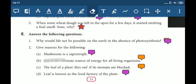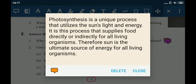Now, sun is the ultimate source of energy for all living organisms. Photosynthesis is a unique process that utilizes the sun's light and energy. It is this process that supplies food directly or indirectly for all living organisms. Therefore, sun is the ultimate source of energy for all living organisms.